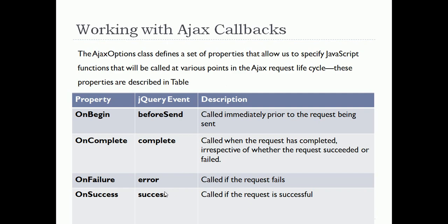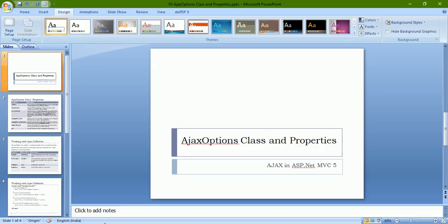OnFailure will be called when your request fails, and OnSuccess will be called when your request is successful. Many times we use OnFailure and OnSuccess, but depending on your requirement you can also use OnBegin and OnComplete. These also have respective jQuery events. Let us see this part practically in Visual Studio.